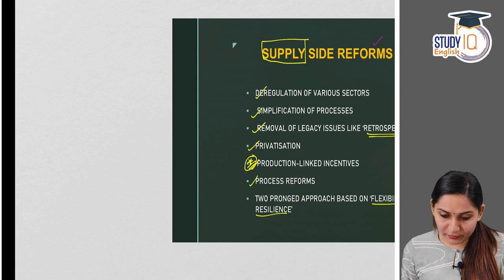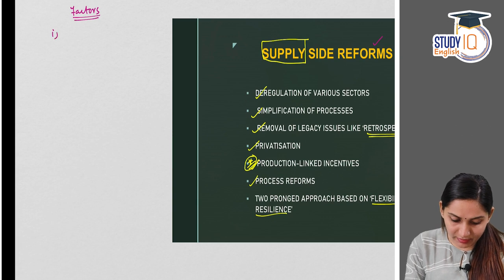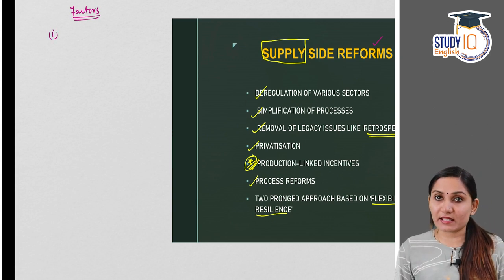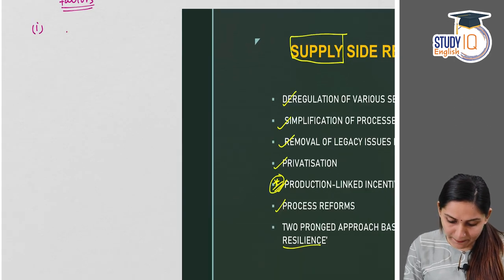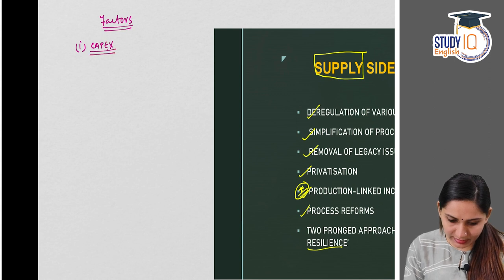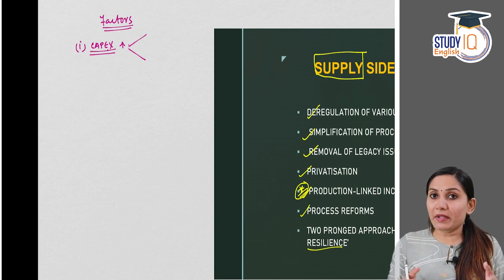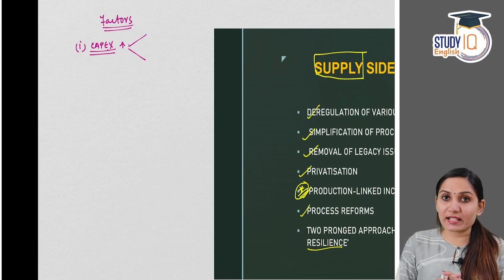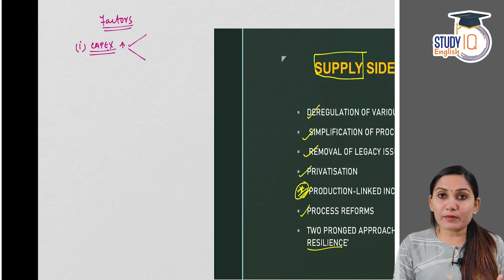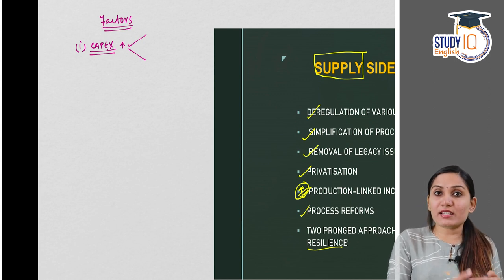Coming to some of the factors — the first one is there was a very sharp increase in government expenditure, especially on the capital side, that is capex or capital expenditure. Now this increase in capital expenditure can be understood as both a demand side reform as well as a supply side reform. We have already seen the investment vicious cycle, which starts with investment, leading to increased production.